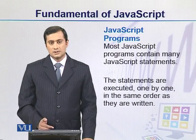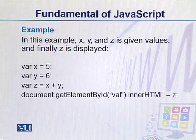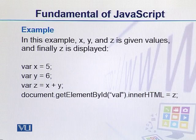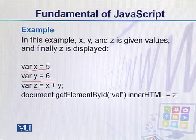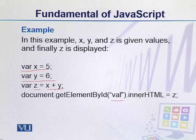Remember that statements end with a semicolon. Here we have a small program: we have two variables defined, and we have an arithmetic operator that adds them, and a particular element which displays the result. This complete set of instructions is a JavaScript program.